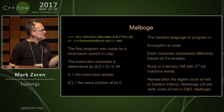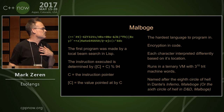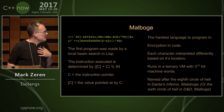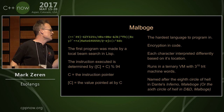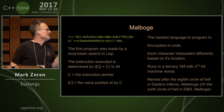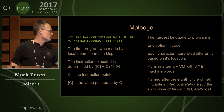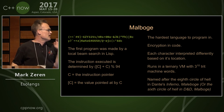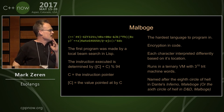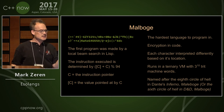The next one is Malbolge. The goal here was to design the hardest language to program in, and the first program was found by beam search using Lisp. The instruction executed is determined by the instruction pointer plus the instruction, the data at the instruction pointer, plus the instruction pointer mod 94 just to get started. And it works on a virtual machine that uses trits instead of bits.